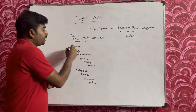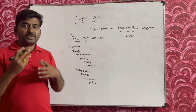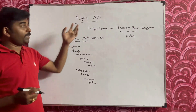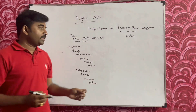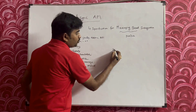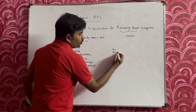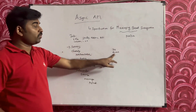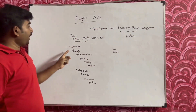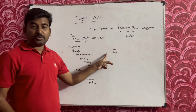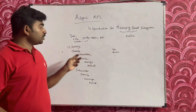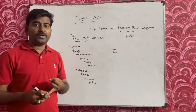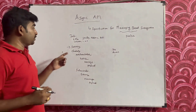Then there is a server section where you can mention the messaging broker. This specification or template is common for all protocols — for example, you can use it for JMS, AMQP, or any other MQ. In the server section you specify the protocol details, and you can also mention your test environment details and production environment details.